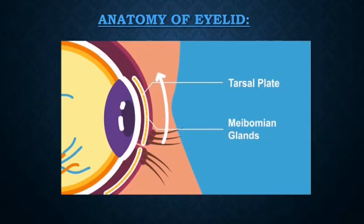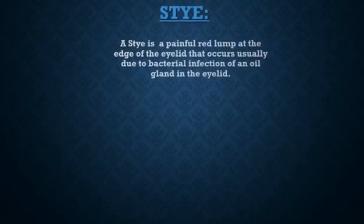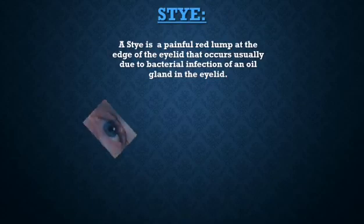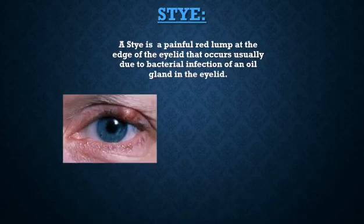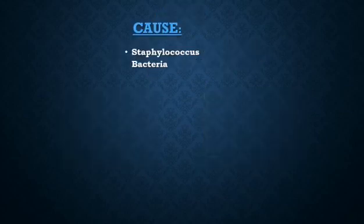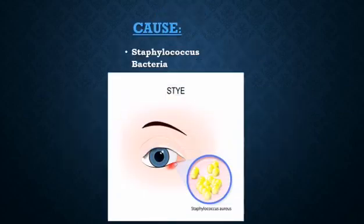Moving forward to stye. A stye is a painful red lump at the edge of the eyelid that occurs due to bacterial infection of an oil gland in the eyelid. Stye may look like a boil or a pimple. Styes are often filled with pus. A stye is usually caused by Staphylococcus aureus bacteria which infect the internal sebaceous glands within the eyelid.